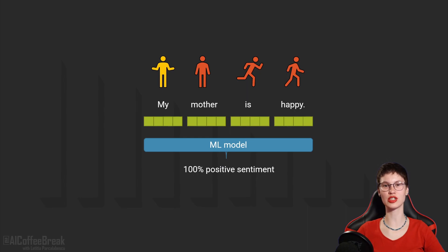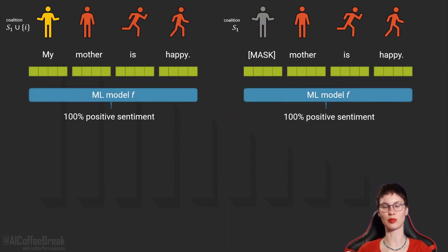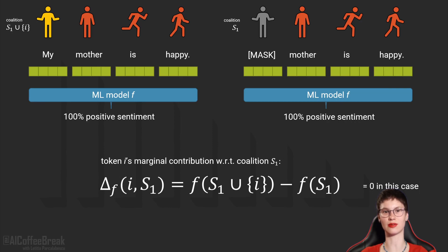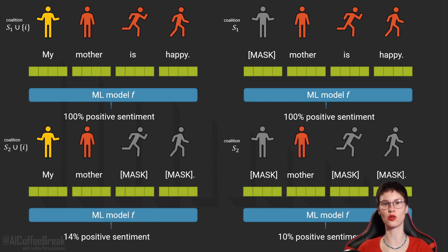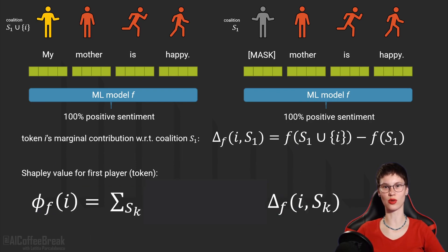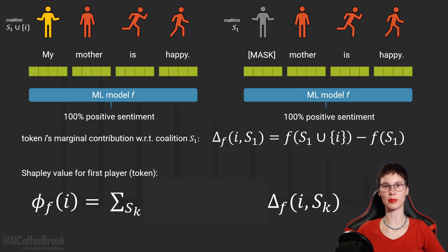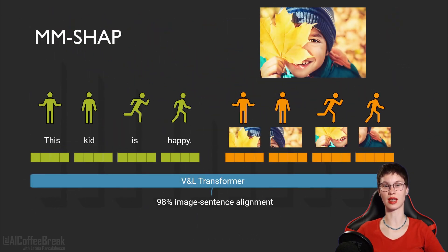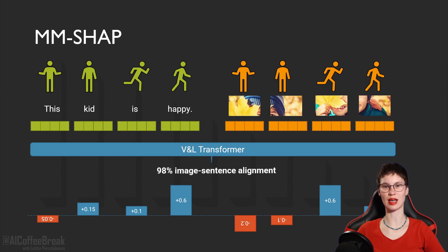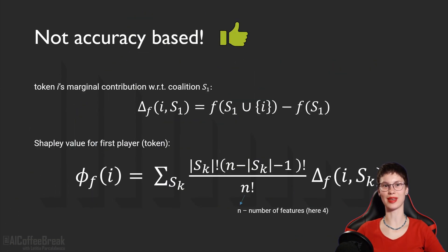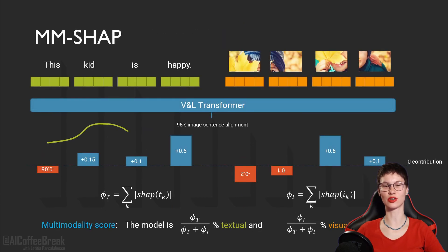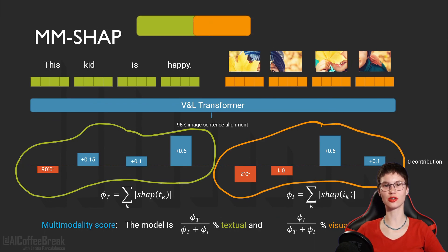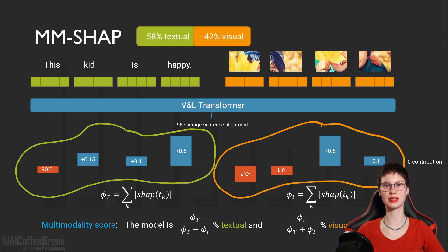For example, the probability or activation value computed for a sample, irrespective of whether its prediction is correct or not. We take the difference between the model output with a token being active and with it inactive, and we do this for all possible combinations of tokens switched on and off. To get the contributions for a token, which can be positive or negative, we sum up and normalize over all marginal contributions. We define MMShap by calculating the contribution percentage of text tokens and comparing it to the contribution percentage of image tokens, which can be extended to multiple modalities.